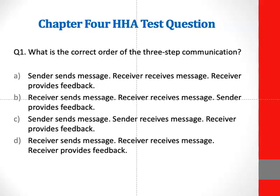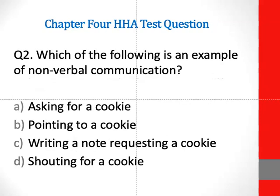Moving on to Chapter 4. Question 1: What is the correct order of the three steps of communication? A is the correct answer — the sender sends a message, the receiver receives a message, and the receiver provides feedback. Question 2: Which of the following is an example of nonverbal communication? B is the correct answer — pointing to a cookie.